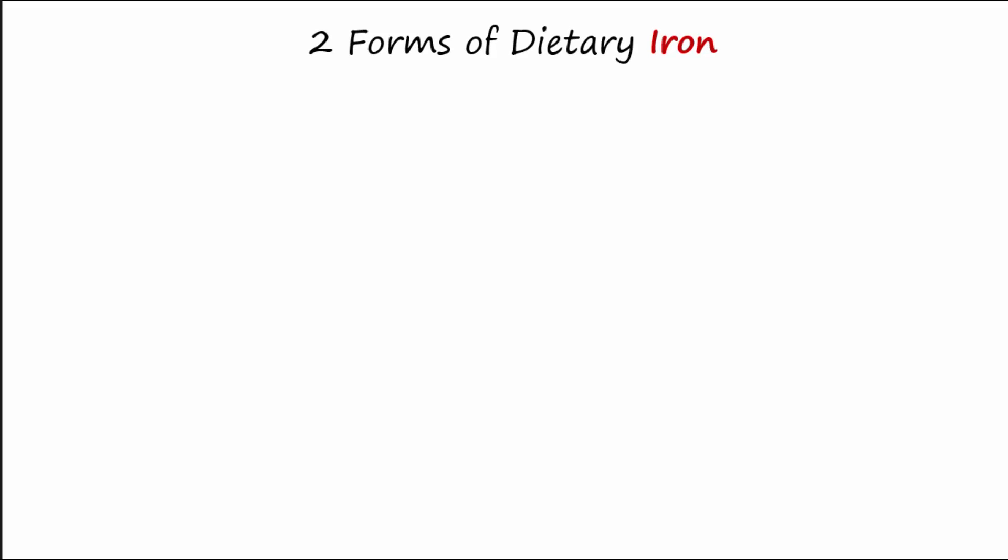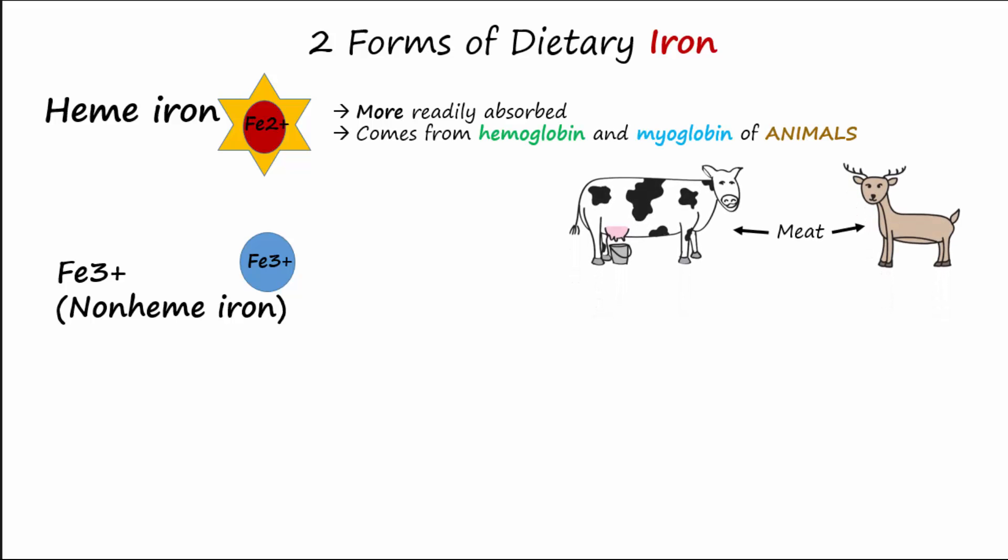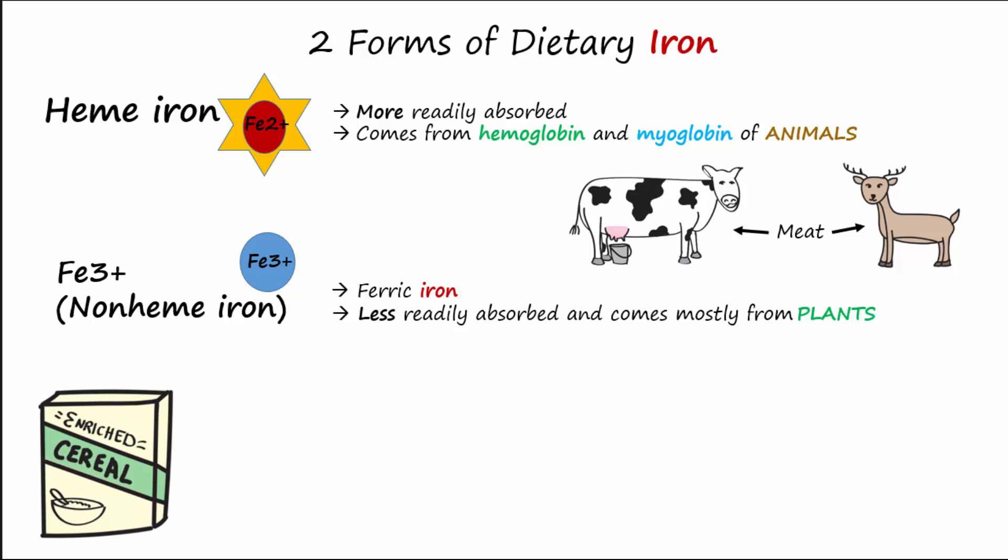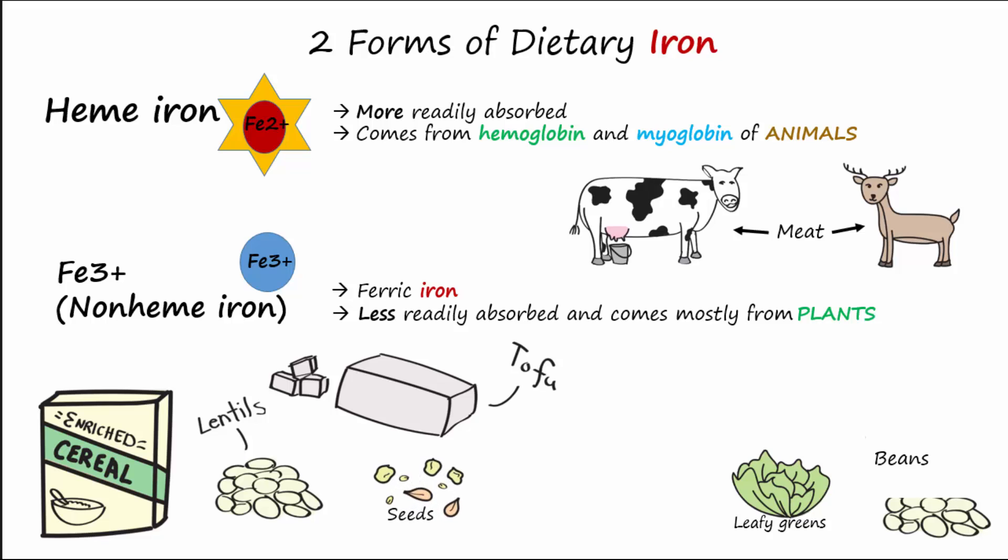There are two forms of dietary iron: heme and non-heme iron. Heme iron is Fe2+ surrounded by an organic molecule. Heme iron is more readily absorbed and comes from hemoglobin and myoglobin found in animals, so meat is a good source. Dietary non-heme iron, inorganic iron Fe3+ or ferric iron, is less readily absorbed and comes mostly from plants. Good sources of non-heme iron include iron-enriched breakfast cereals, lentils, beans, tofu, leafy greens, seeds, nuts, and wheat.